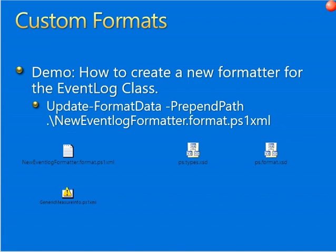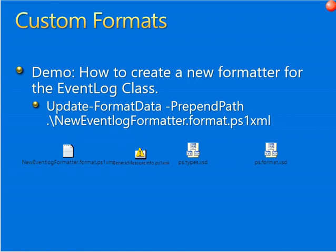I have a demo to show you how to create a format for the event log class. You can see a very basic example using Update-FormatData, specifying the path. I have listed the files here to be used as a lab — a few scripts like new event formatter, message formatter, ps-type, and ps-format. You can save these to text files for event logs and format them using the shell, or use your own scripts to call Update-FormatData, reload the formatting, and test the format with PowerShell. When PowerShell starts, it loads format data from the formatting files in the PowerShell directory into the session, and you can update it.